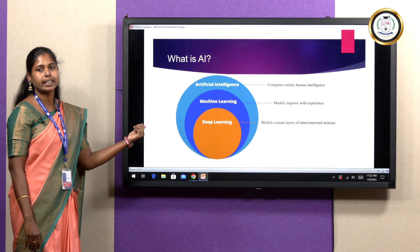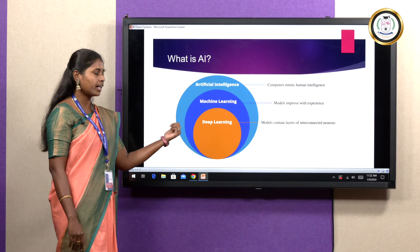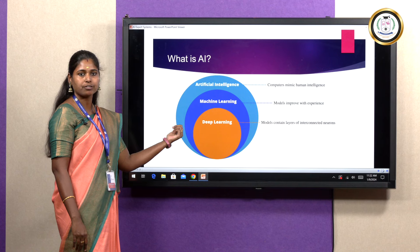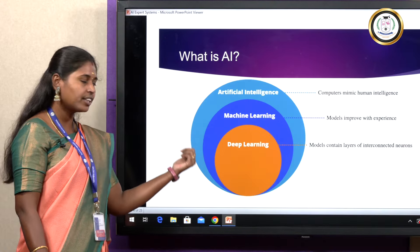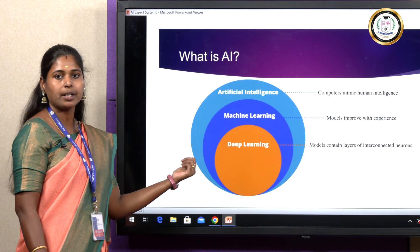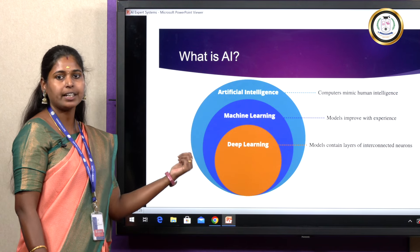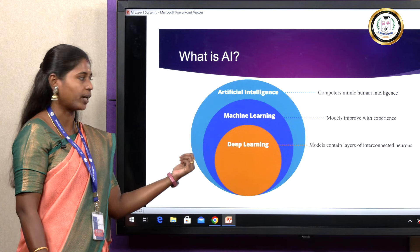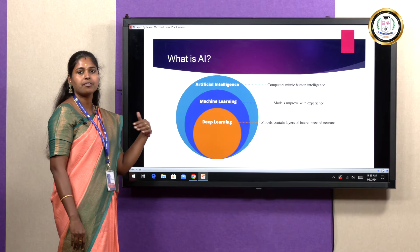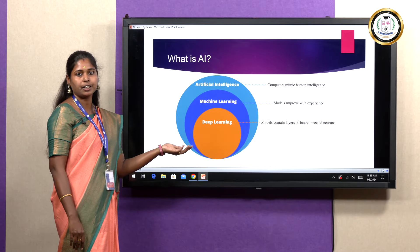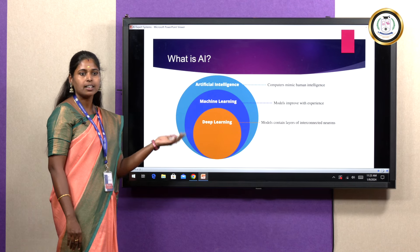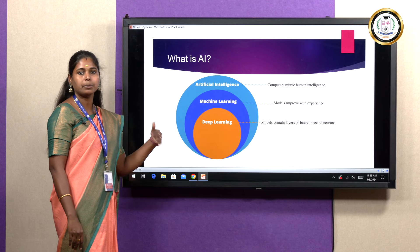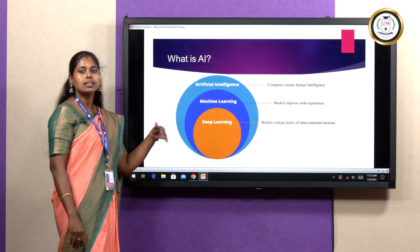Deep learning will have many interconnected neurons so that it can handle the functionality of processing — whatever input we are getting, whatever data we are processing, everything will be handled by deep learning. Deep learning will have the knowledge base where it acts as an important centralized factor. Machine learning is like giving training to the system — whatever we teach the system, machine learning acts according to that. If we tell ten times that a particular object is a cat, the machine learning will identify it as a cat. Based on user input only, machine learning will work.